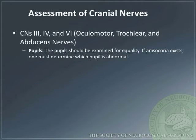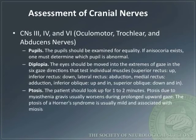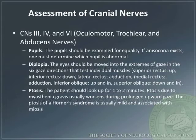Pupils should be examined for equality. If anisocoria exists, one must determine which pupil is abnormal. To test diplopia, the eyes should be moved into the extremes of gaze in the six gaze directions that test individual muscles. To test ptosis, the patient should look up for one to two minutes. Ptosis due to myasthenia gravis usually worsens during prolonged upward gaze, while the ptosis of Horner's syndrome is usually mild and associated with miosis.